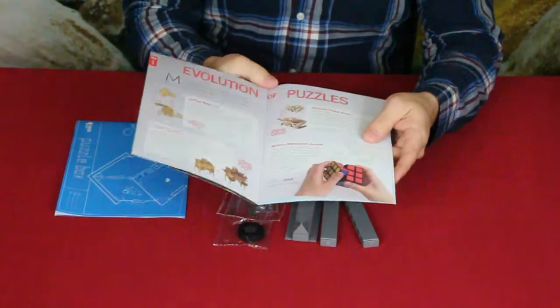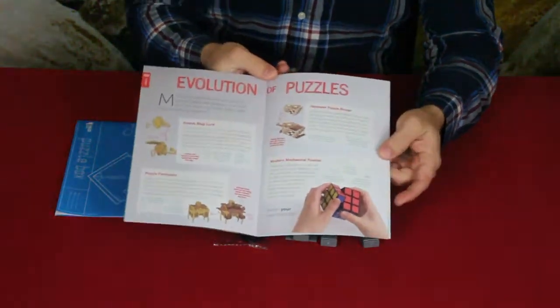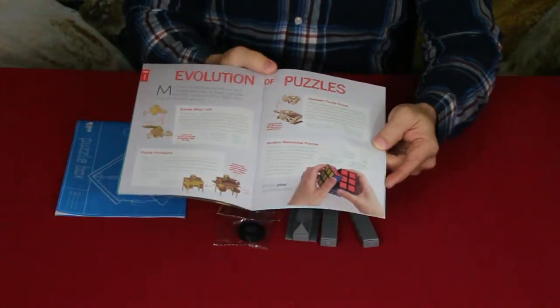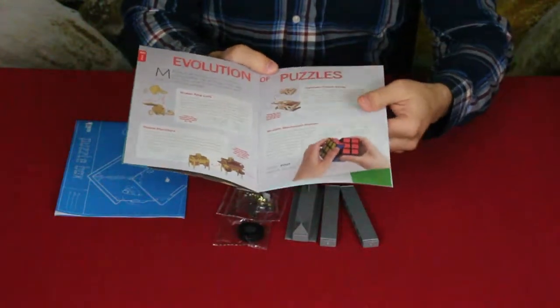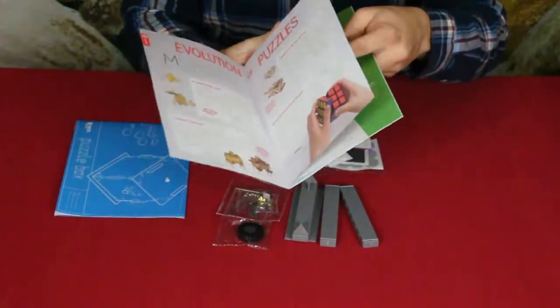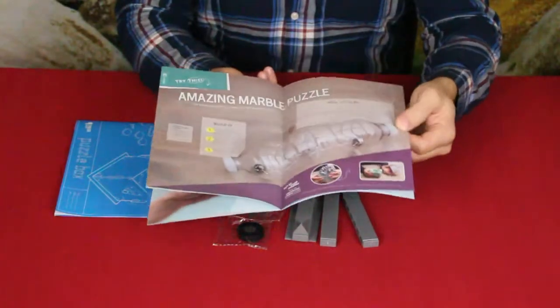Here it's talking about puzzles and how they're a way to test your creative thinking. They're showing the evolution of puzzles, and you can see of course the one down there, the Rubik's Cube, which most people have seen or played with before, and a few other things.